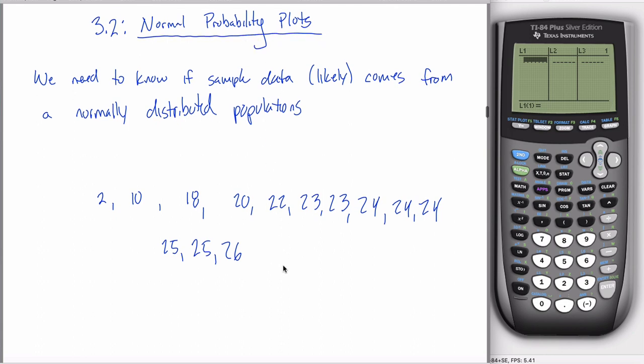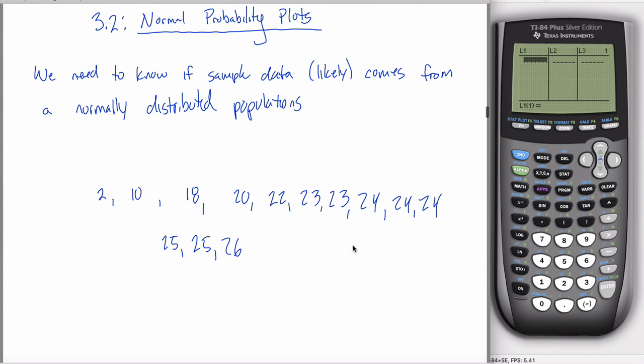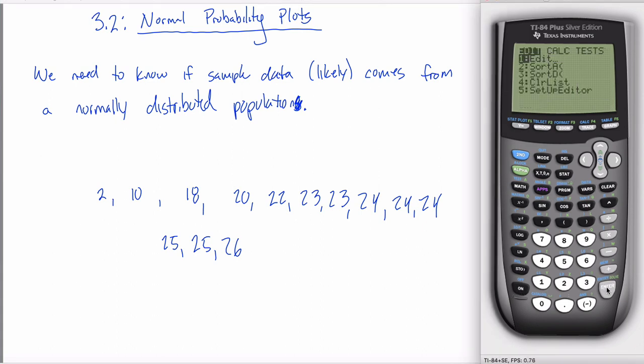It turns out that such a thing exists, and it even has a name - a normal probability plot. So in a normal probability plot question, you're given some sample data and you have to determine whether that data likely came from a normally distributed population. How do you do it? Anytime you're making a plot in this class, it's a three-step process. The first step is to hit the stat key and then go into the edit menu and type your data into a list.